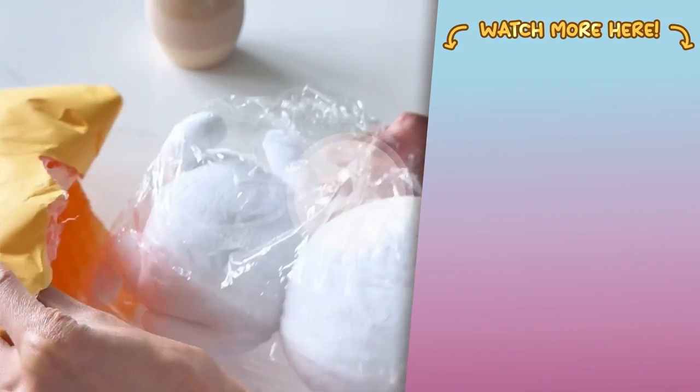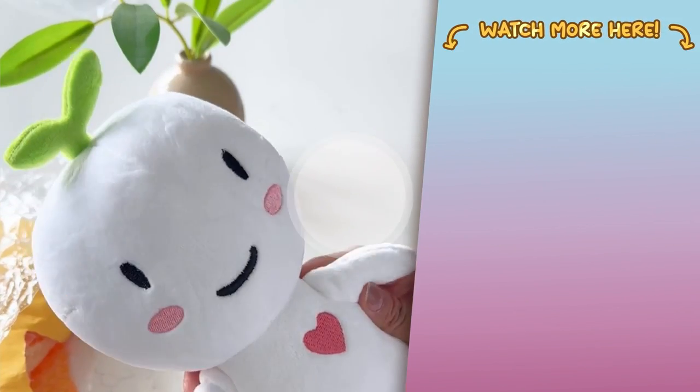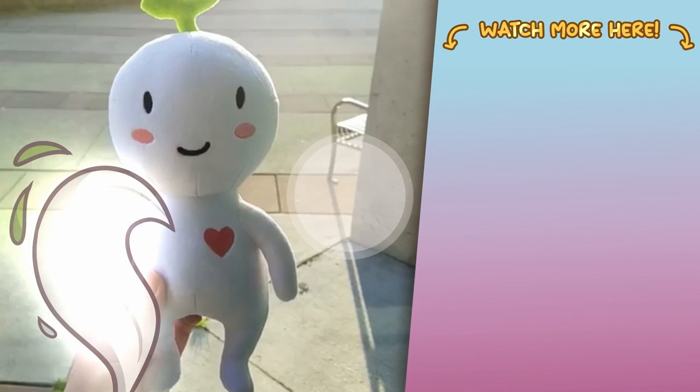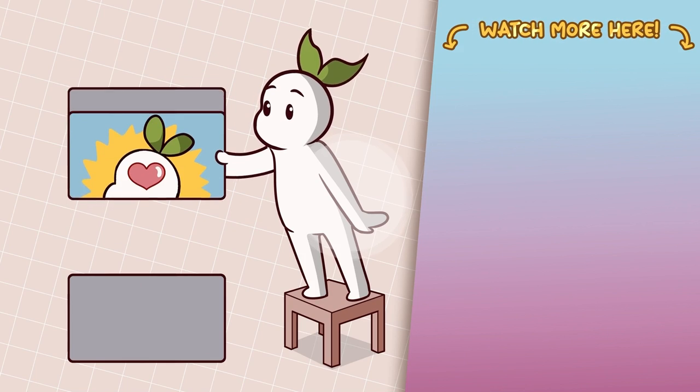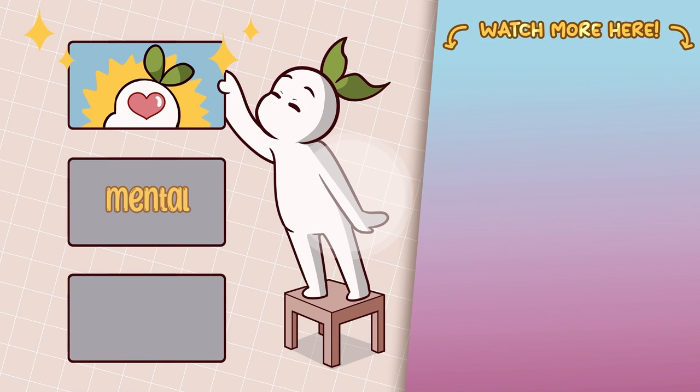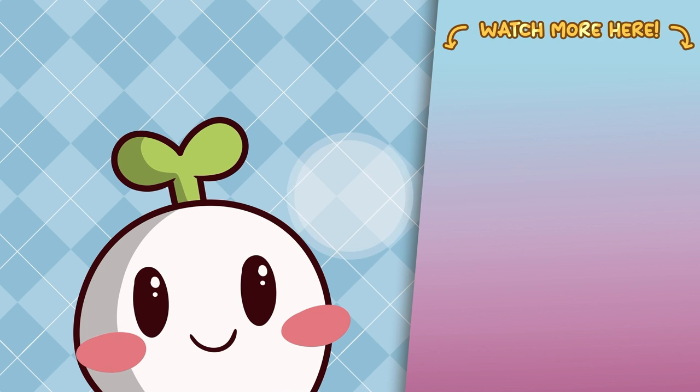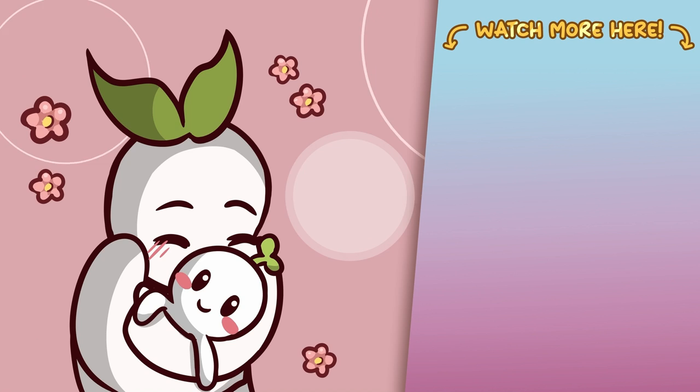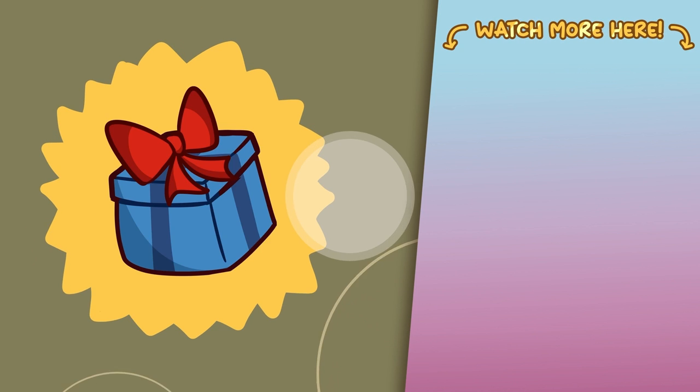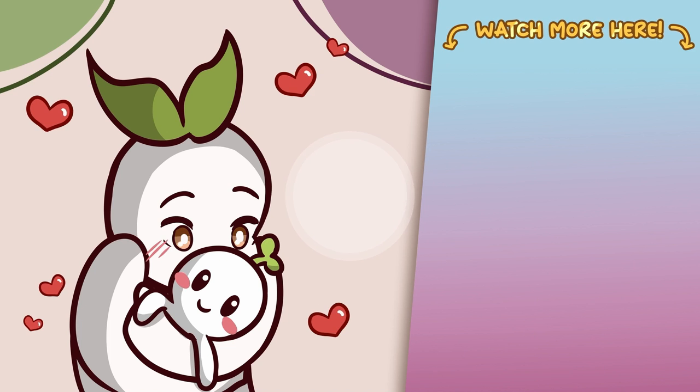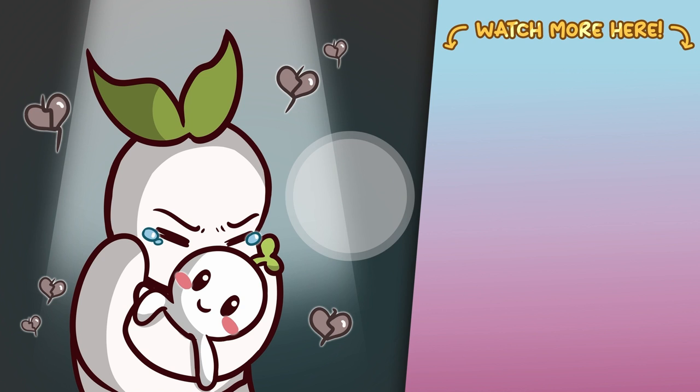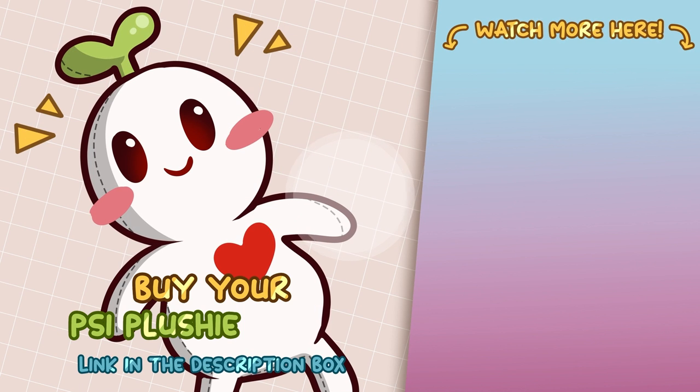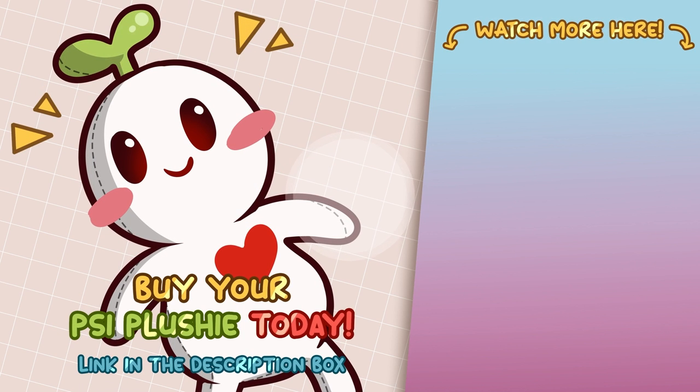Are you looking for a cuddly companion that brings positivity and mental wellness to your daily life? Get your very own Sai. The lovable plushie is here to brighten your days. It embodies the spirit of Psych2Go, and it serves as a reminder to prioritize your mental well-being. Its green leaf symbolizes growth, renewal, and the importance of self-care. Whether it's for yourself, or as a thoughtful gift for a loved one, Sai is ready to be your snuggly friend through all of life's ups and downs. Buy your Sai plushie today. Link is listed in the description box.